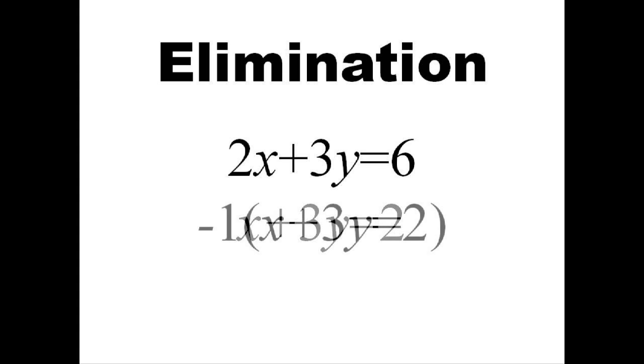From here, we want to eliminate, or cancel out, one of the variables. In this case, it will be easiest if we multiply the second equation by negative 1, since that will give us 3y in one equation and negative 3y in the other. If you'd rather eliminate the x's, you would multiply the second equation by negative 2.